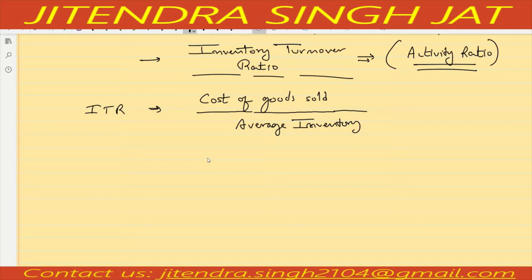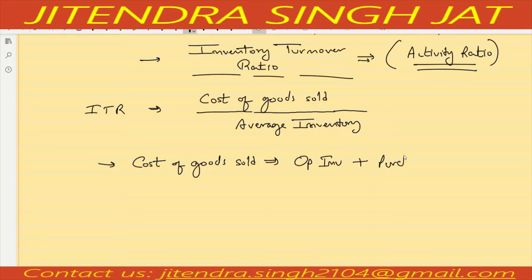Now how to calculate Cost of Goods Sold. The formula of Cost of Goods Sold is: Opening Inventory plus Purchases (purchases include direct expenses also) minus Closing Inventory. This is one formula to calculate Cost of Goods Sold.